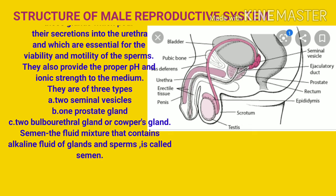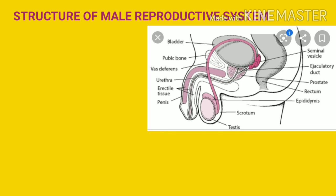Next, what is semen? Semen is a fluid mixture that contains the alkaline fluid of the accessory glands and sperm. The mixture of alkaline fluid from the accessory glands and sperms produced by the testes is called semen. During ejaculation, semen is released from the human male body.